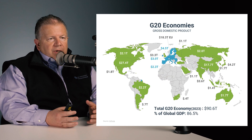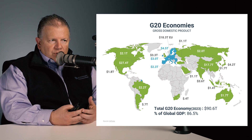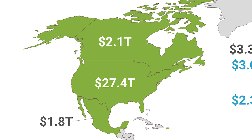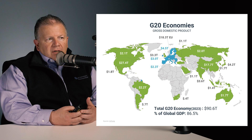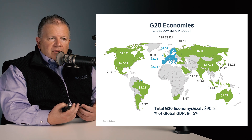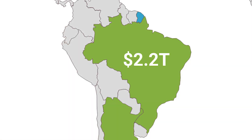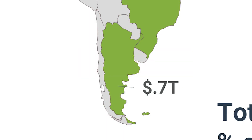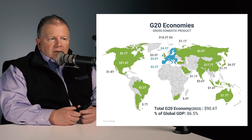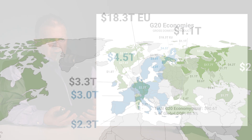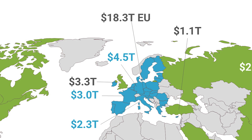Now let's look at G20, expanding our horizon a little bit. The same North America numbers apply — Canada at $2.1 trillion and the US at $27.4 trillion. Moving down to Mexico on the left-hand side, $1.8 trillion, so Canada and Mexico are fairly close in size in North America. Moving down to South America, Brazil is at $2.2 trillion, and below them Argentina at $0.7 trillion, or $700 billion in total GDP in 2023, according to the IMF. Looking over to Europe, the EU region is shown in blue and called out at $18.3 trillion. Don't double count those countries — just look at the total.